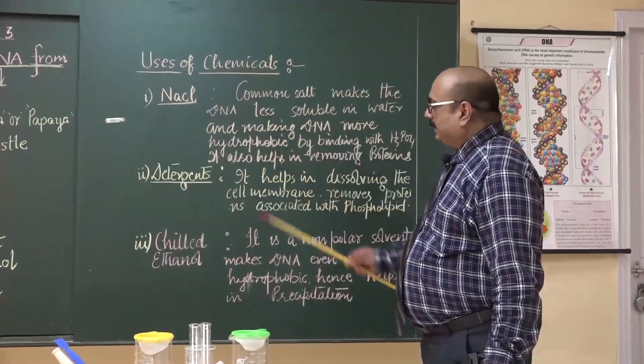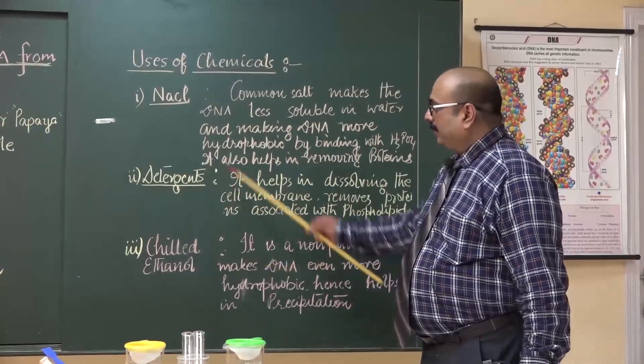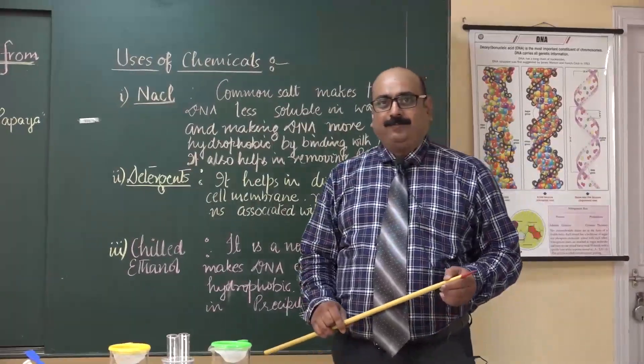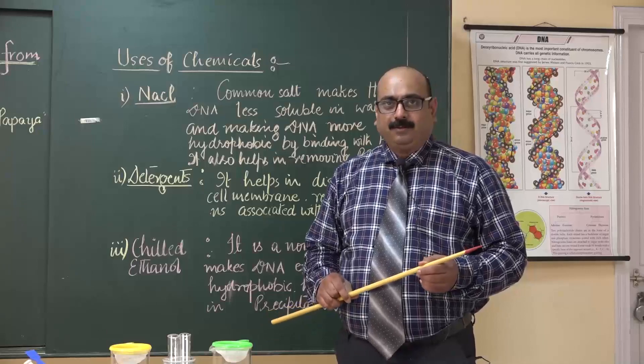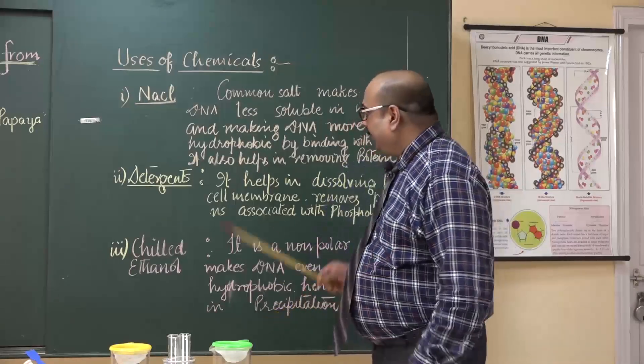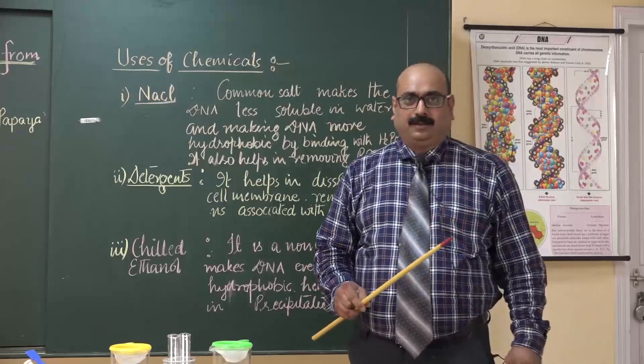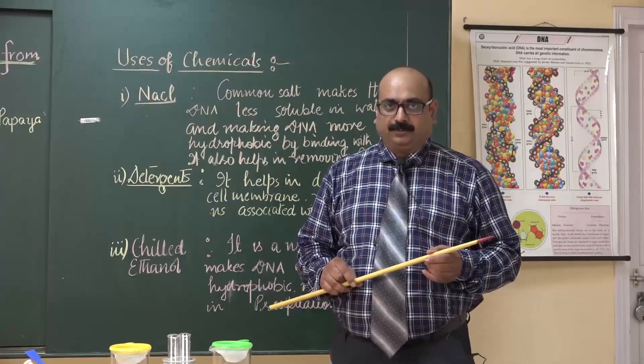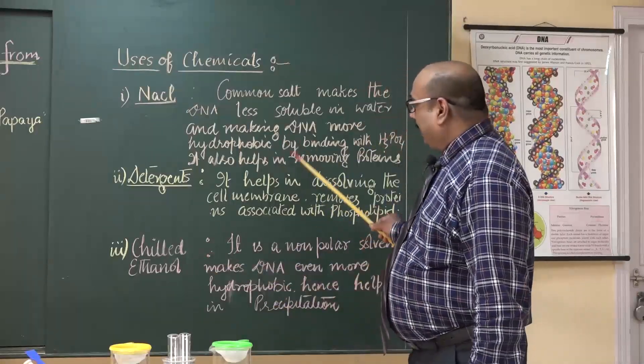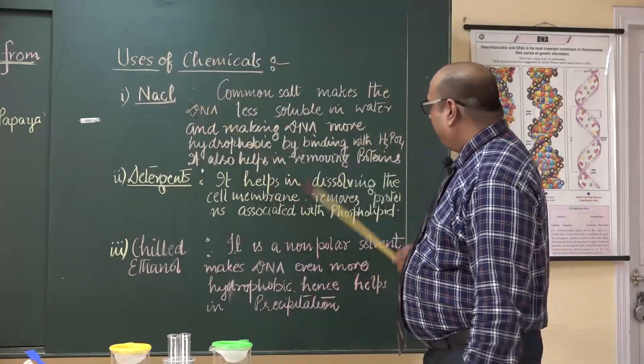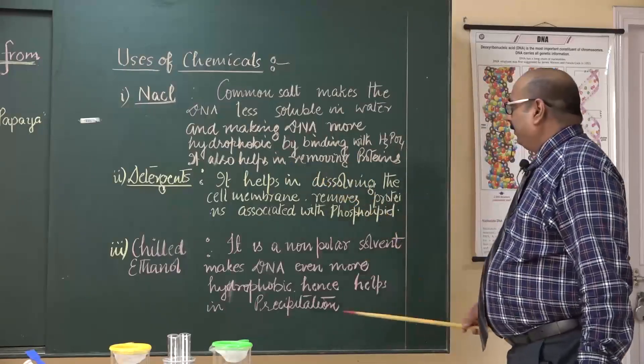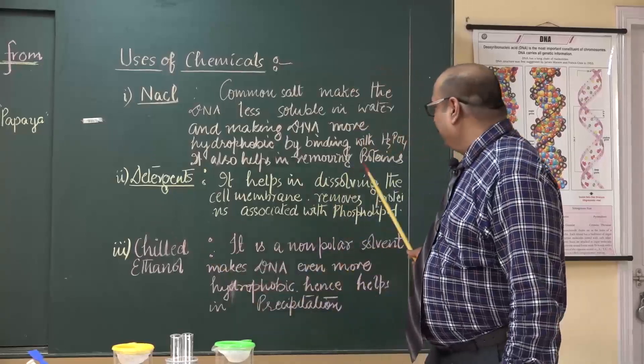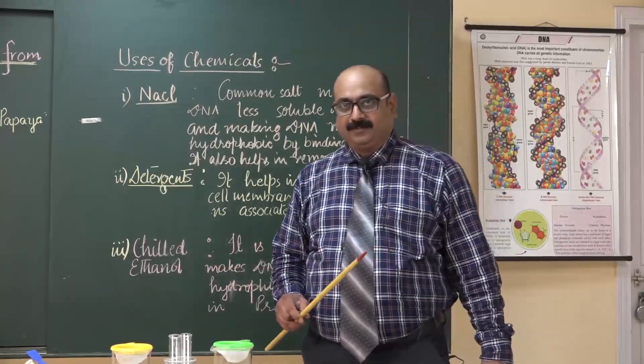Why we use NaCl, detergent, and chilled ethanol? NaCl, sodium chloride that is common salt, makes the DNA more hydrophobic so that it can less dissolve in water, a non-polar solution. And NaCl also binds with phosphoric acid, which helps in removing proteins.